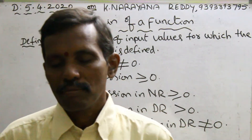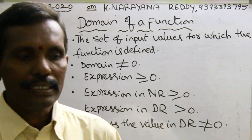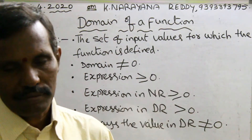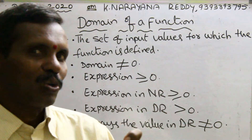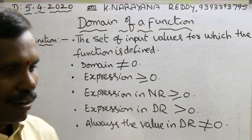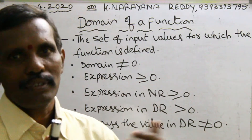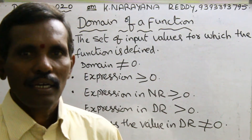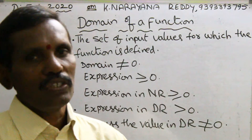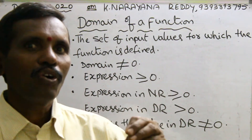In domain, the main important point is simply: domain is nothing but input. Range is nothing but output. Generally, you can input some values through a keyboard for the computer, for a processing unit. In the same manner, here, domain also — you can input some values. Those values are domain values.